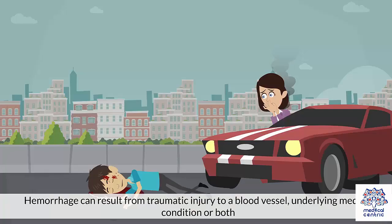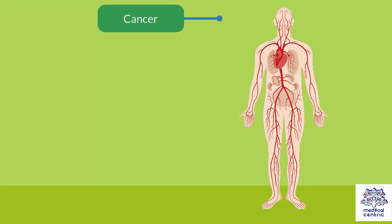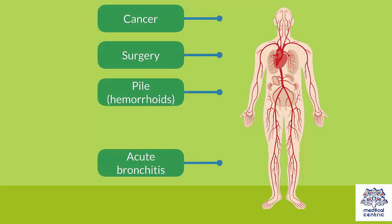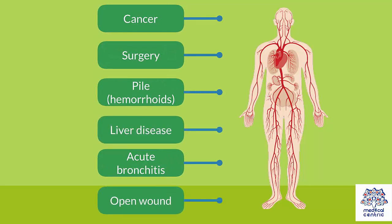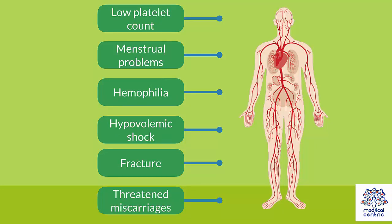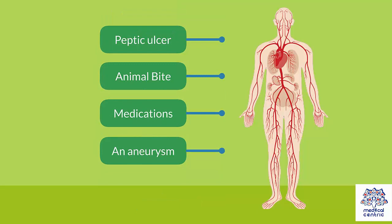Hemorrhage can result from traumatic injury to a blood vessel, an underlying medical condition, or both, including cancer, surgery, piles or hemorrhoids, liver disease, acute bronchitis, open wound, low platelet count, menstrual problems, hemophilia, hypovolemic shock, fracture, threatened miscarriages, peptic ulcer, animal bite, and medications.